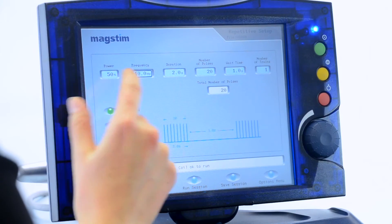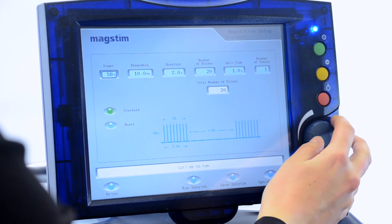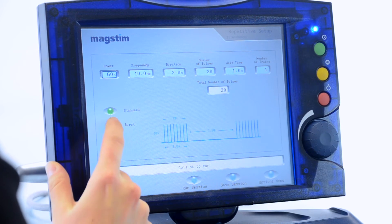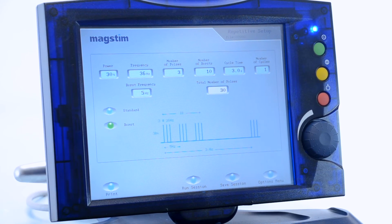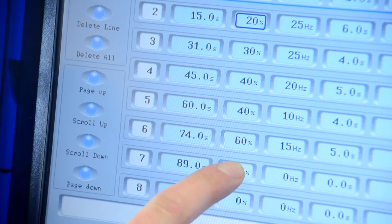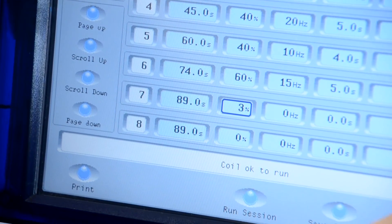In repetitive mode, you can set a continuous train of pulses with adjustable frequency and power, while burst mode allows for groups of pulses. In session mode, you can run different protocols sequentially, each with a different set of parameters.